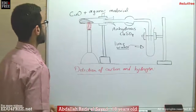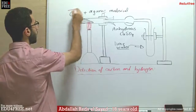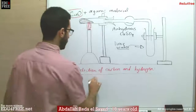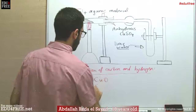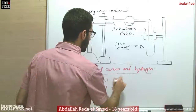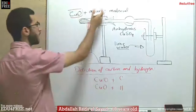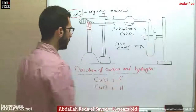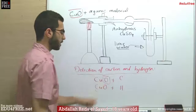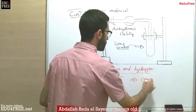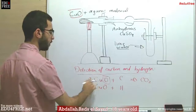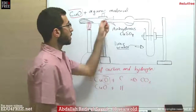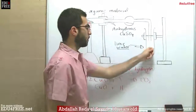Simply what happens is: we put the copper oxide so that we can use its oxygen. Two reactions will appear — one with carbon and one with hydrogen. When the organic material is heated, carbon and hydrogen will be released. The carbon will react with the oxygen of the copper oxide, giving us carbon dioxide. So here we have two moles of carbon dioxide. Carbon dioxide passes through the tube and goes to the lime water.